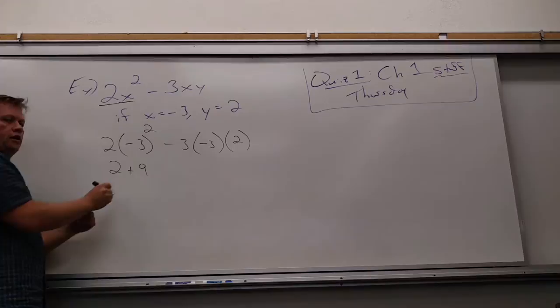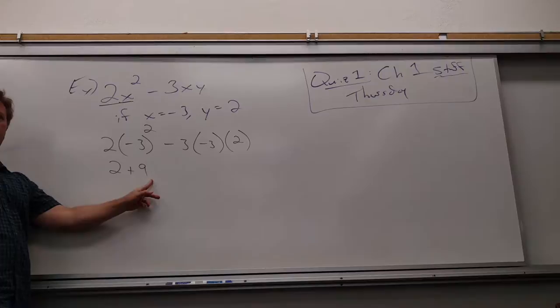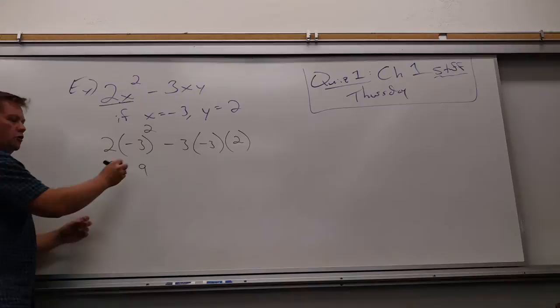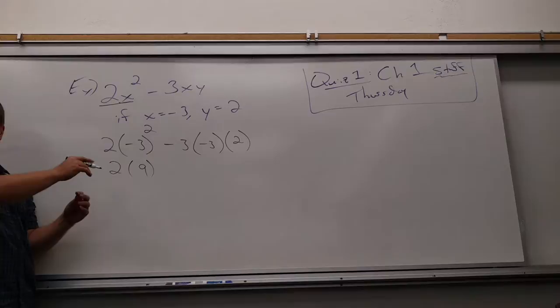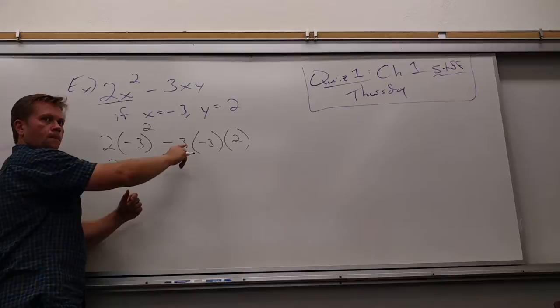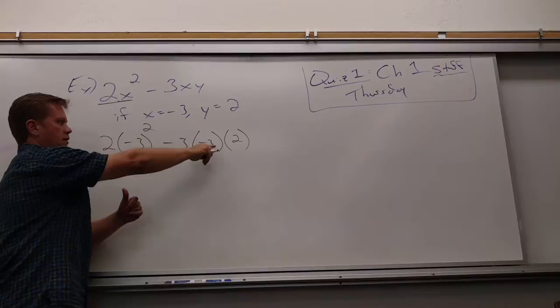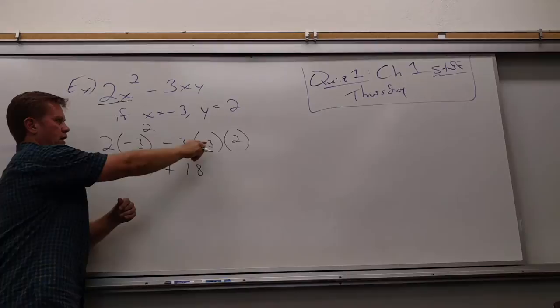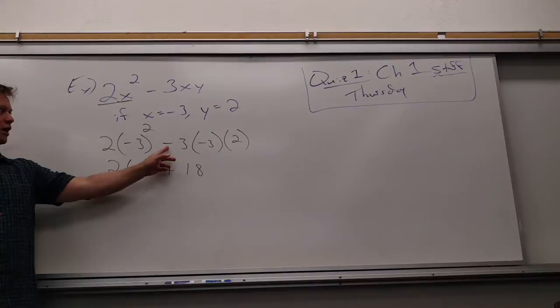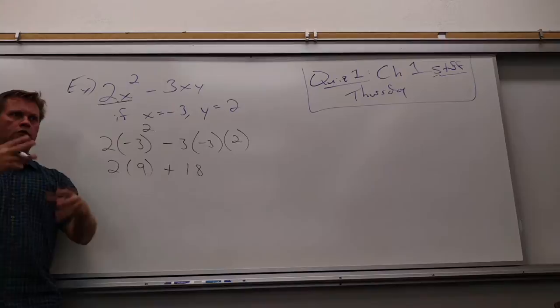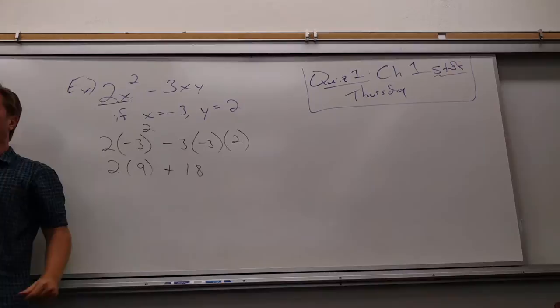Negative 3 squared is positive 9, but if you just write 9 there, you made multiplication become addition — which is wrong. Multiplication has to stay multiplication. So what's negative 3 times negative 3? That's 9. Plus 9 times 2 is 18. So I get plus 18. Negative times negative is positive. Subtraction can become addition if you're subtracting a negative — that's fine. But multiplication can't suddenly become addition.